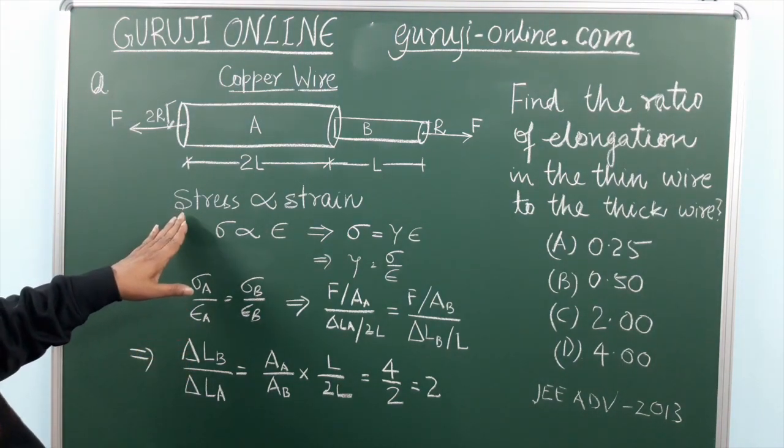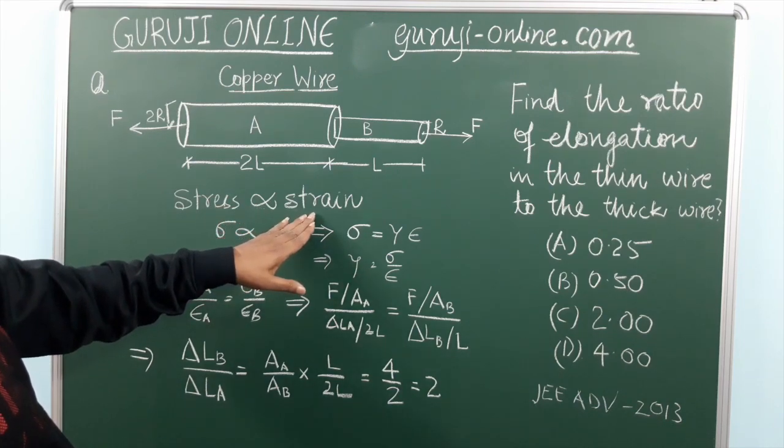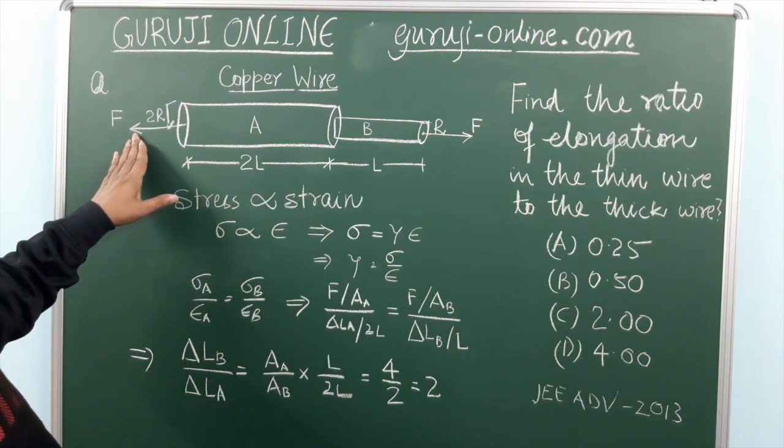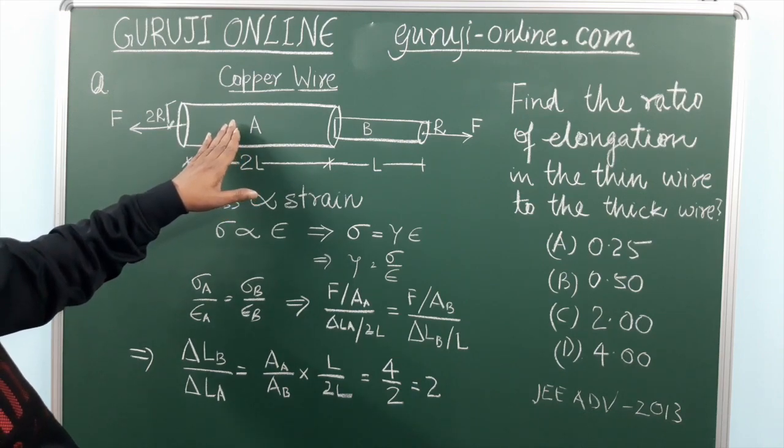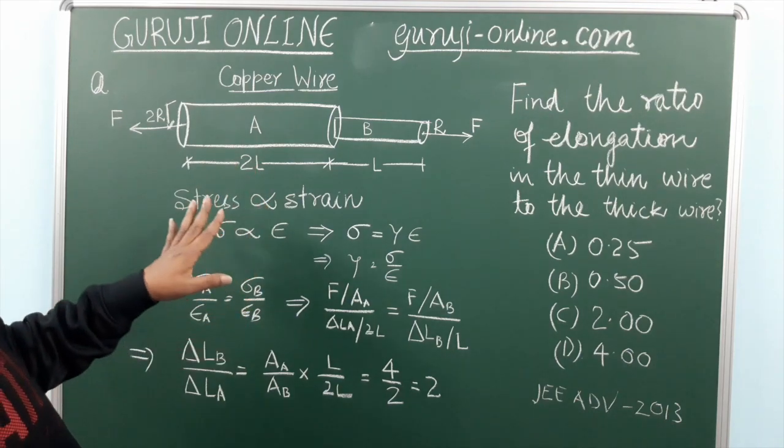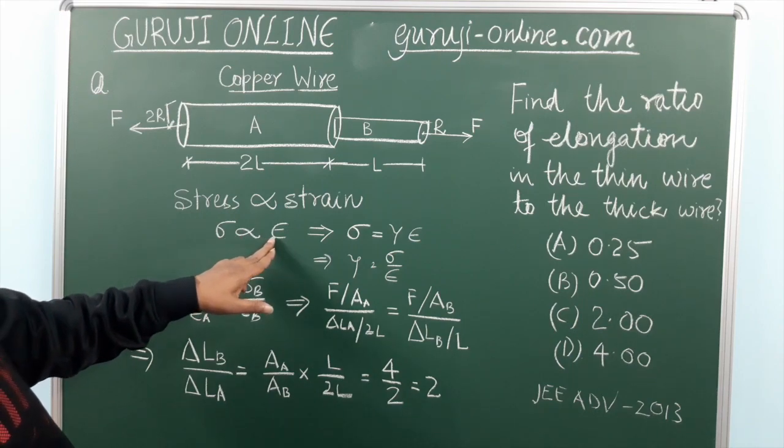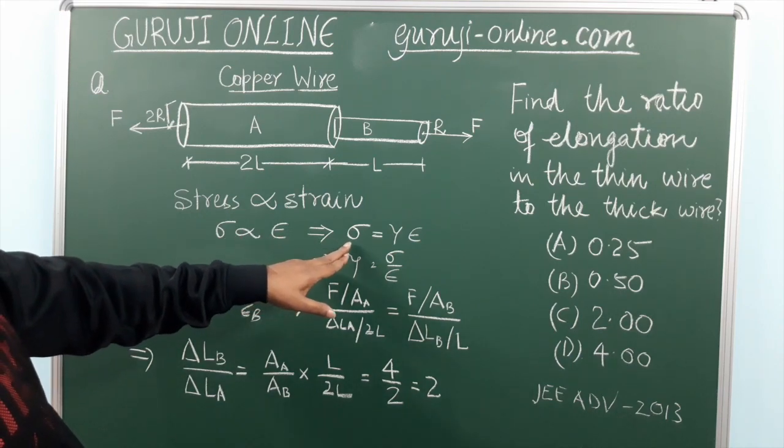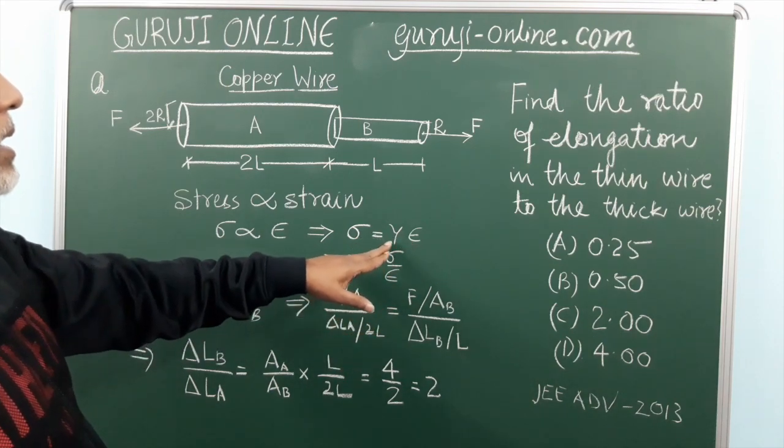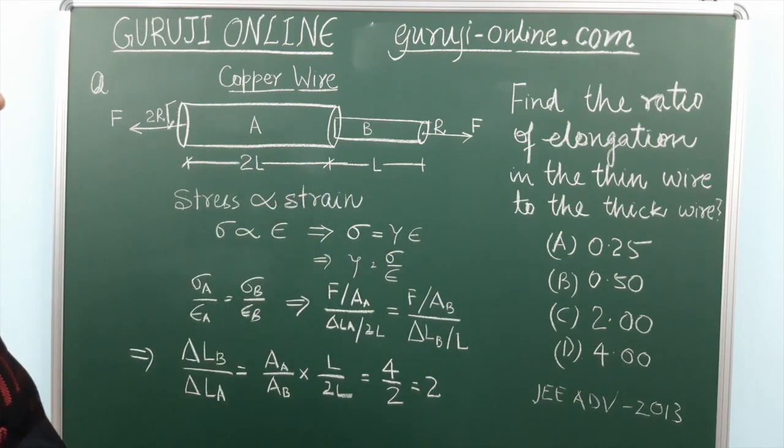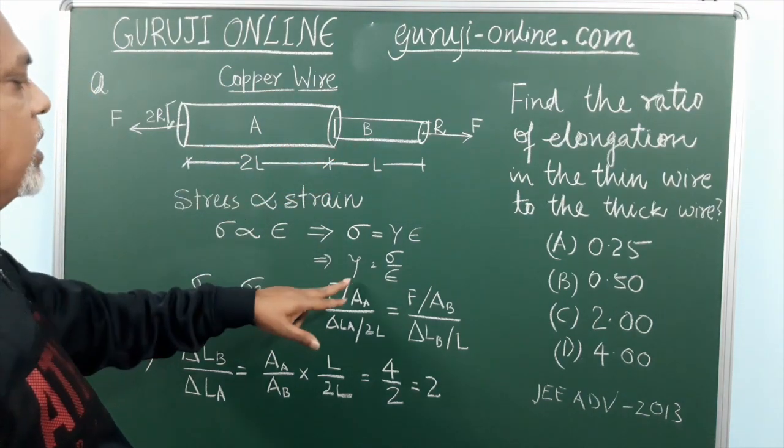We know that stress is proportional to strain. Due to this force, there will be stress developed in this wire. Now this sigma is proportional to strain, that is sigma is equivalent to Young's modulus into strain. This is the property of the material. So for both of these, this property will be the same.